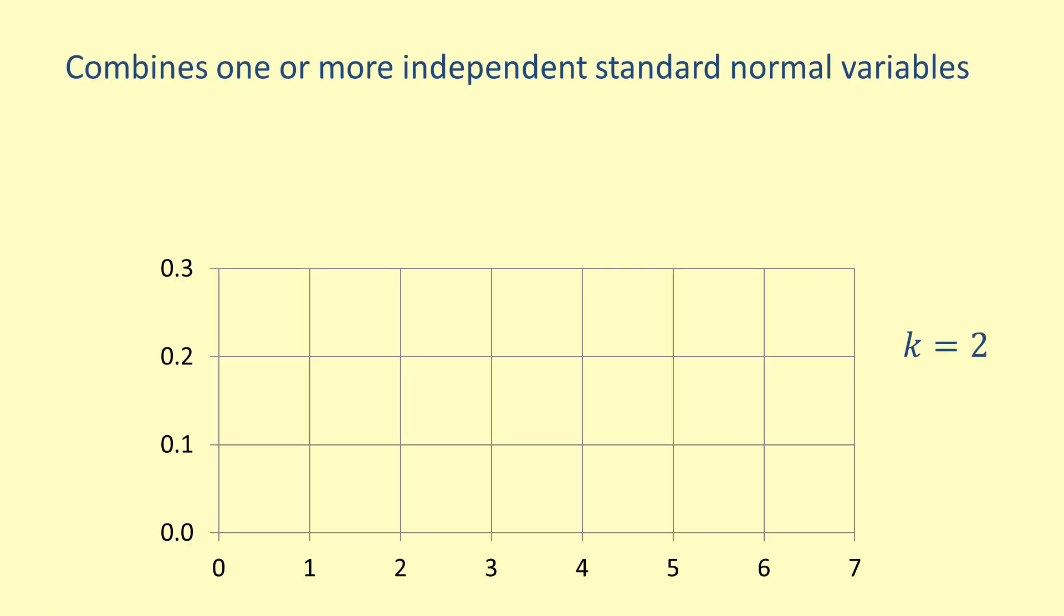The chi-square distribution is obtained by combining one or more independent standard normal variables. Each of these standard normal variables has a mean of 0 and a standard deviation of 1.